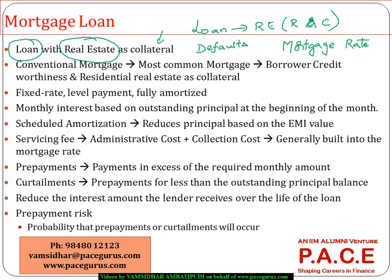The most common form of mortgage which we see is the residential mortgage, for which the bank or any lender assesses the credit worthiness of the borrower and gives a loan against which they get that particular underlying residential real estate as the collateral. Generally, the payment terms associated with the mortgage loan result in a fixed rate level payment, fully amortized. The mortgage rate for the entire period — even if borrowed for a 30-year period — the interest rate for the entire 30 years is fixed.